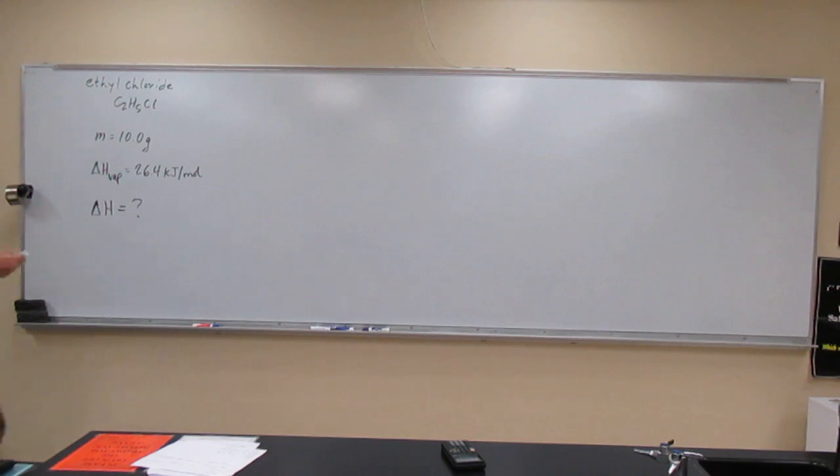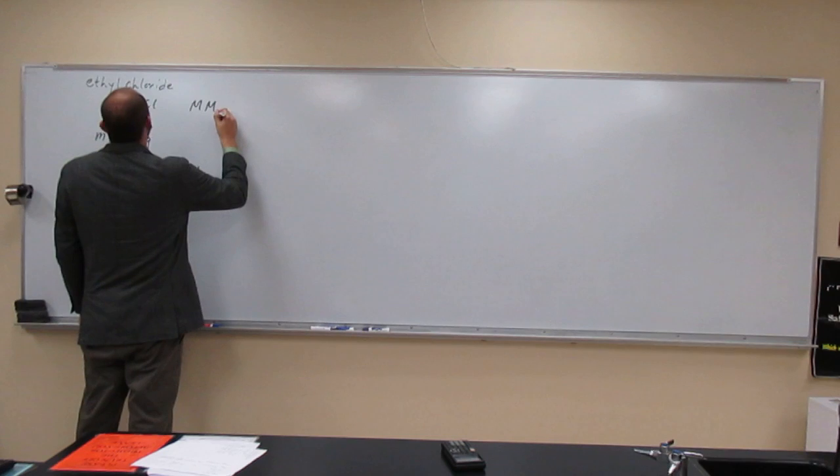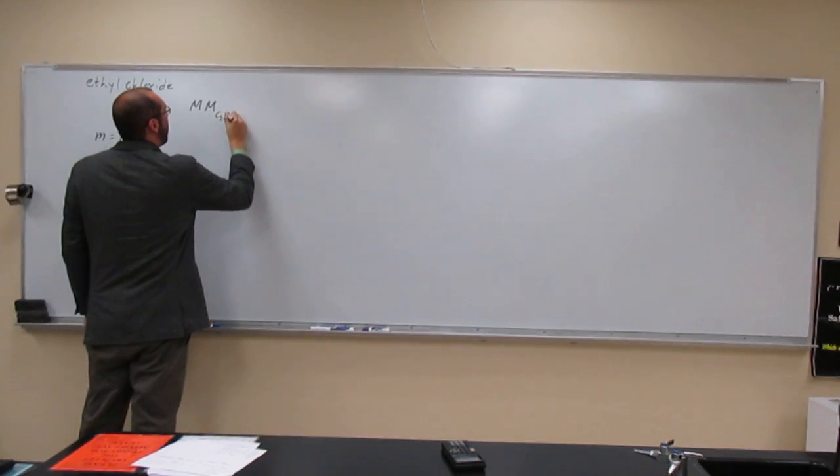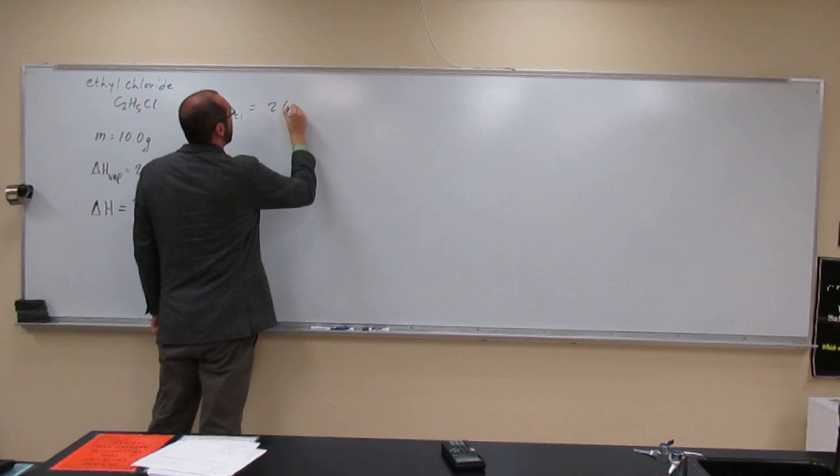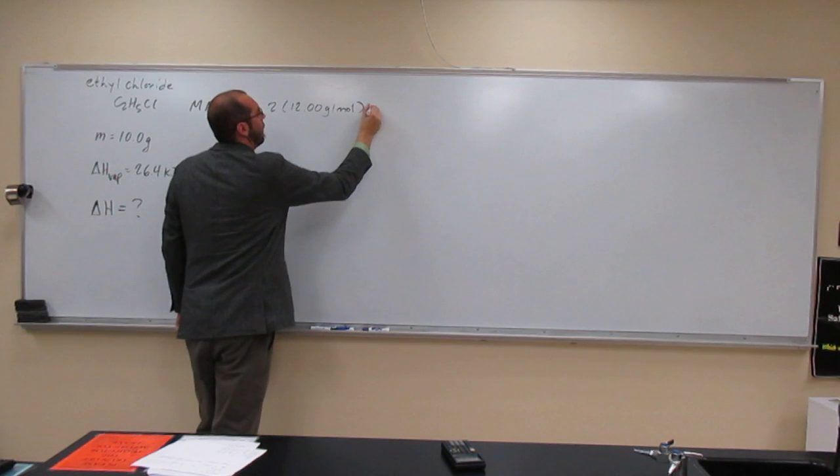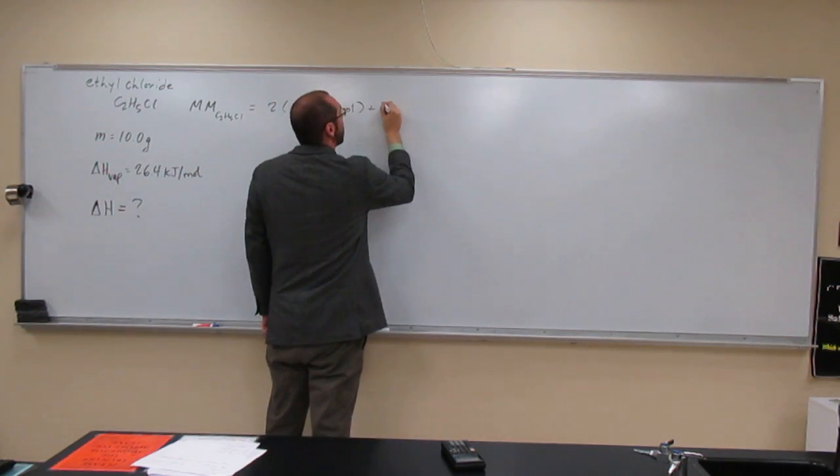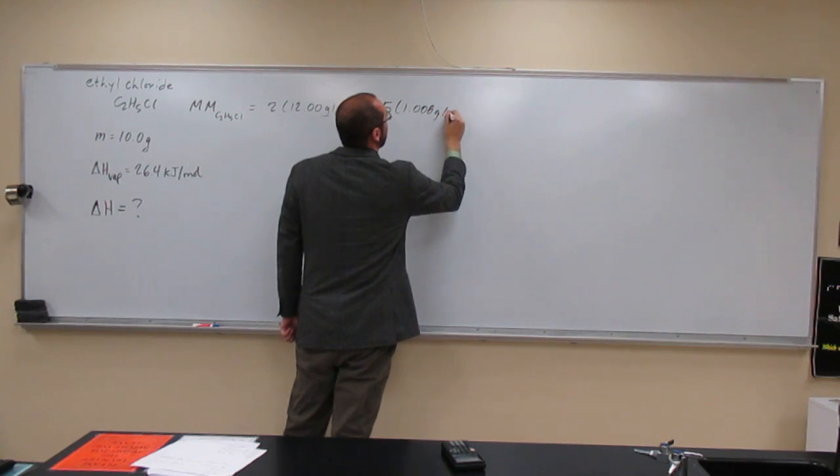So carbon is what? But, so the molar mass of C2H5Cl. Carbon, there's two of them, right? And we got 12.00 grams per mole plus hydrogen. There's five of them. 1.008 grams per mole.